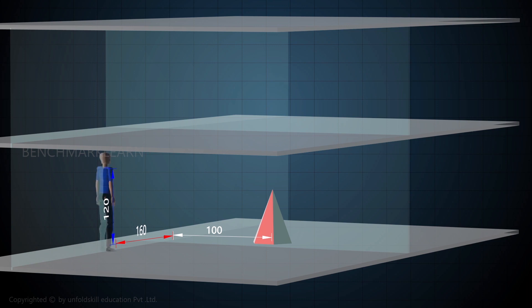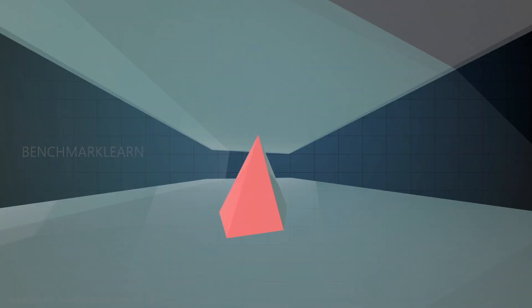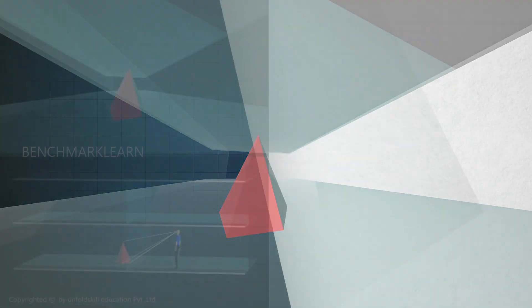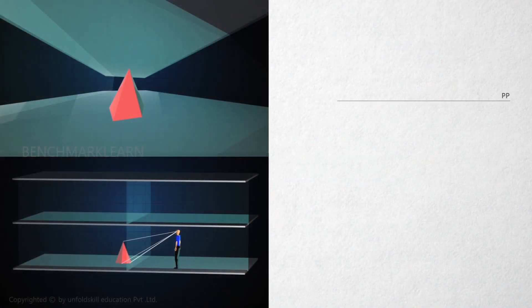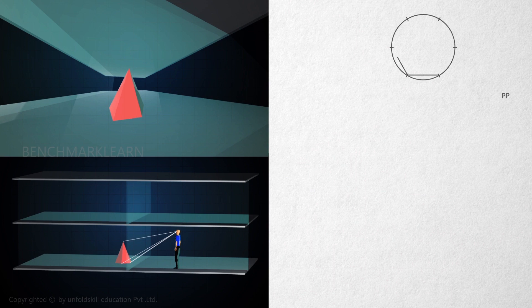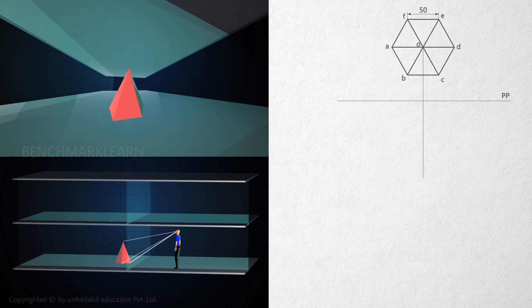Look from the station point to get the perspective view of the hexagonal pyramid. The pyramid is placed on GP with one of the base sides parallel to PP and 40 mm behind PP. Draw the PP and draw the top view of the hexagonal pyramid with side 50 mm. Mark the corner points and apex. The station point lies on the central plane CP which is 100 mm to the left of the axis of the pyramid.